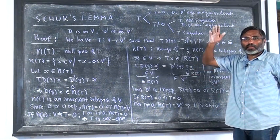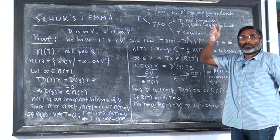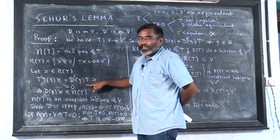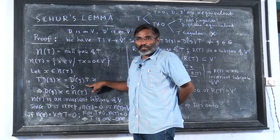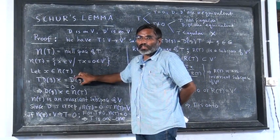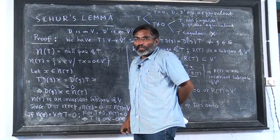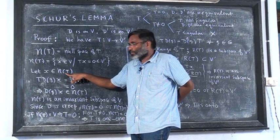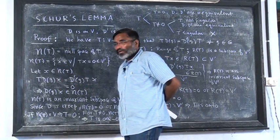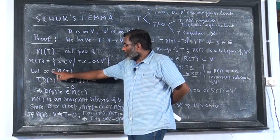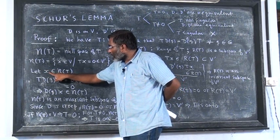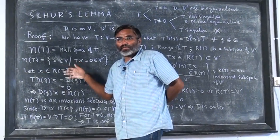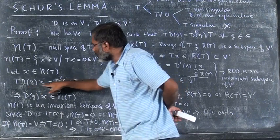So is this clear? Not clear. Did you understand how N of T is invariant? How is this invariant? I have taken an element from N of T and then what I have to show — when D of G acts on this element, I will get an element that belongs to N of T. That is what I have to show. So I am using this intertwining operation.